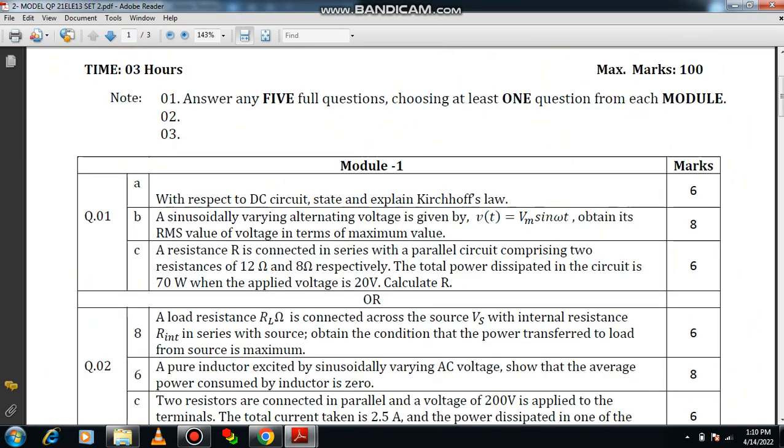Look at question number 1b. A sinusoidally varying alternating voltage is given by V(t) = Vm sin(ωt). Obtain its RMS value of voltage in terms of maximum value. The meaning of this question is you need to derive an expression for RMS value. So let's get started.